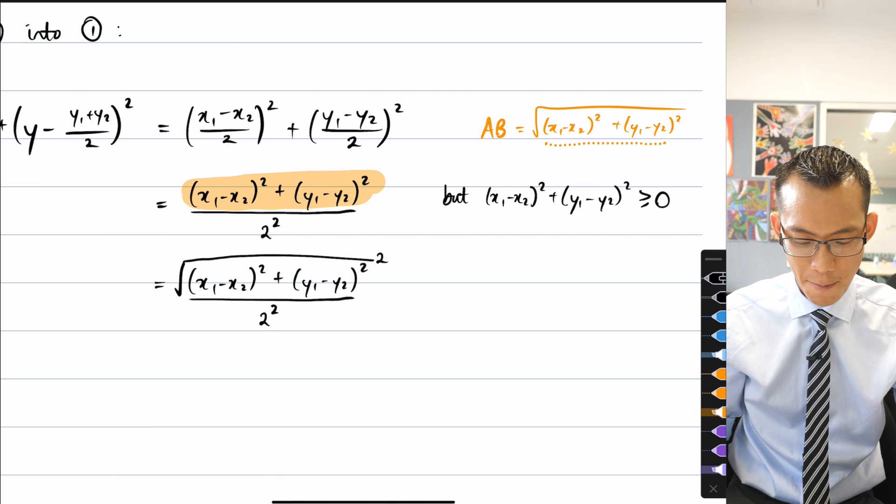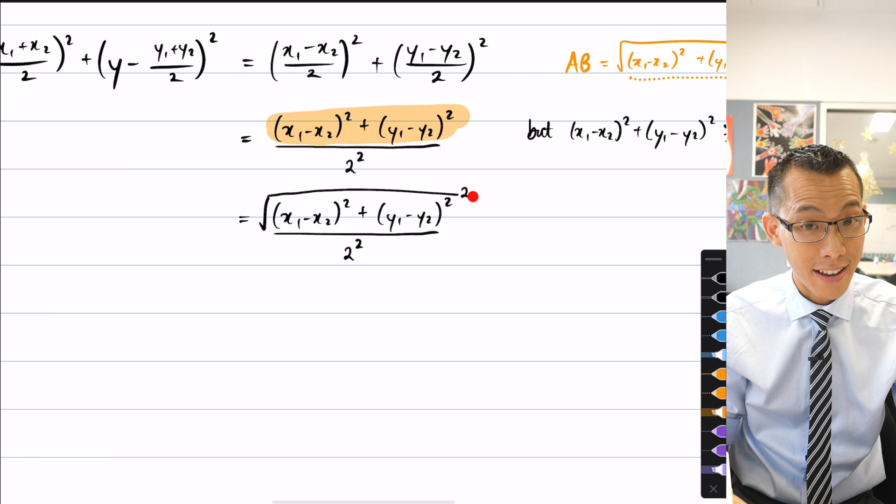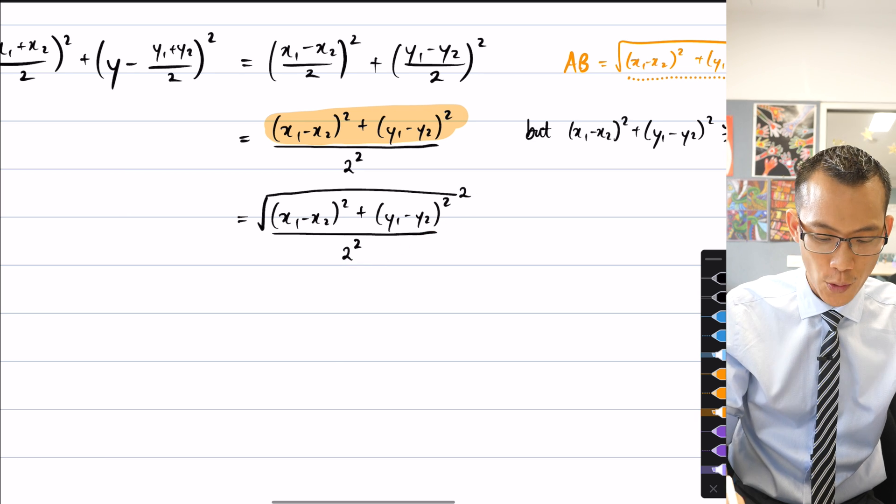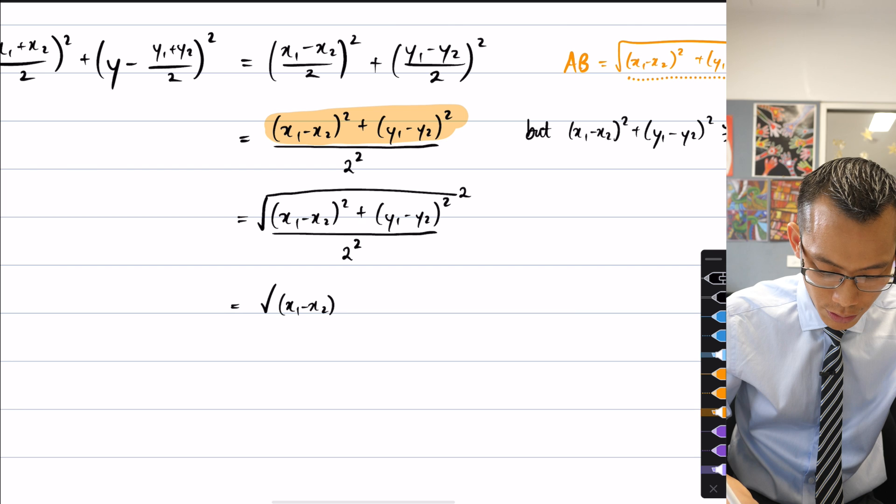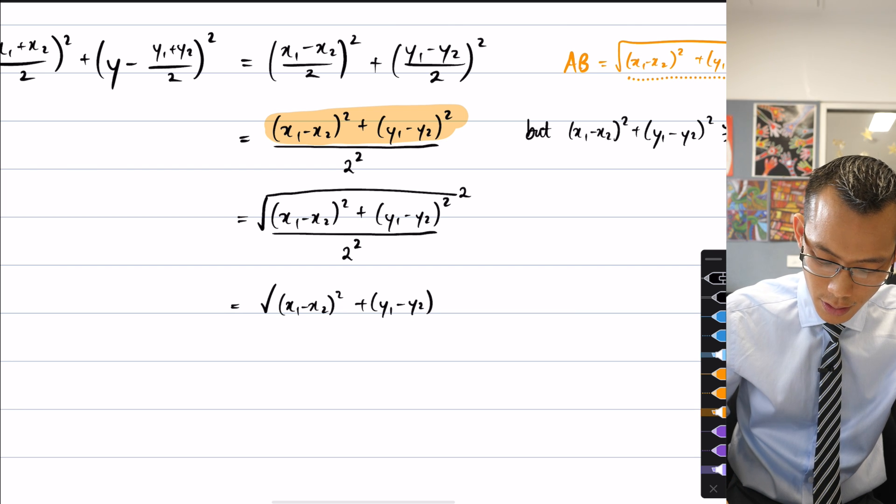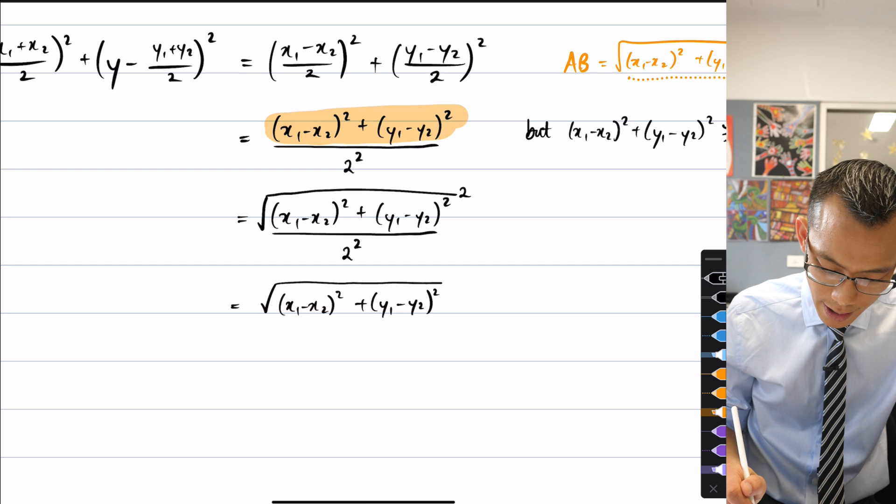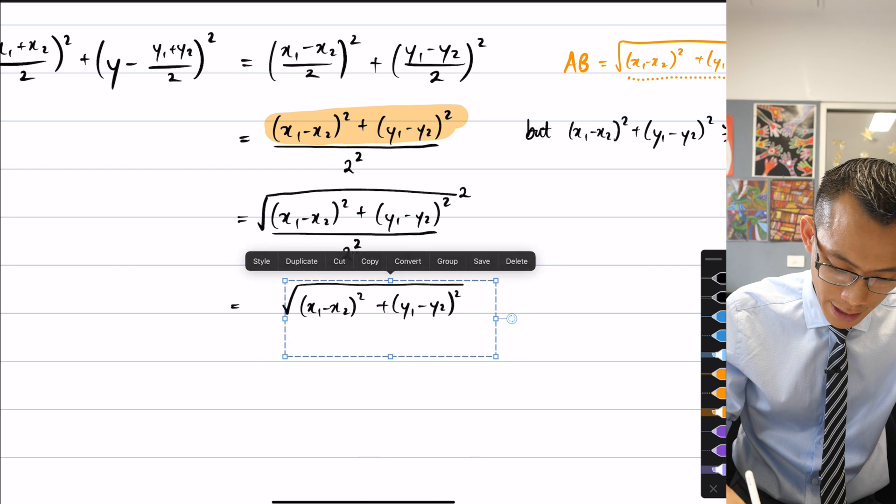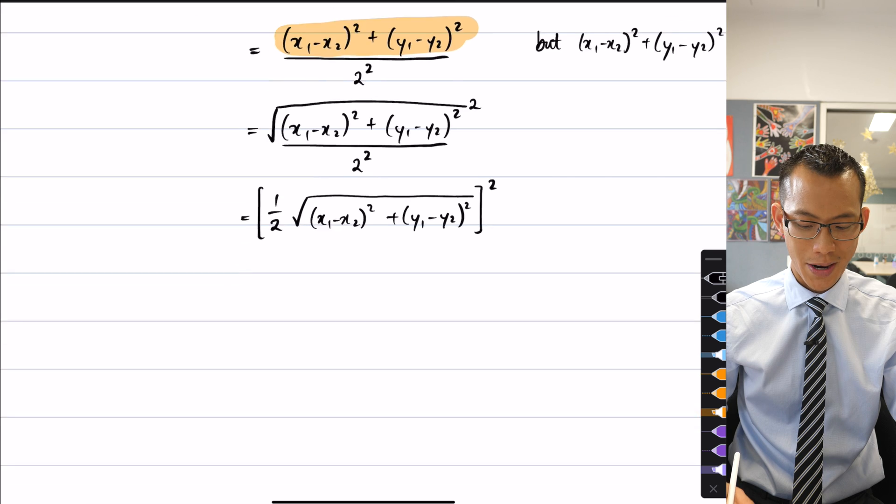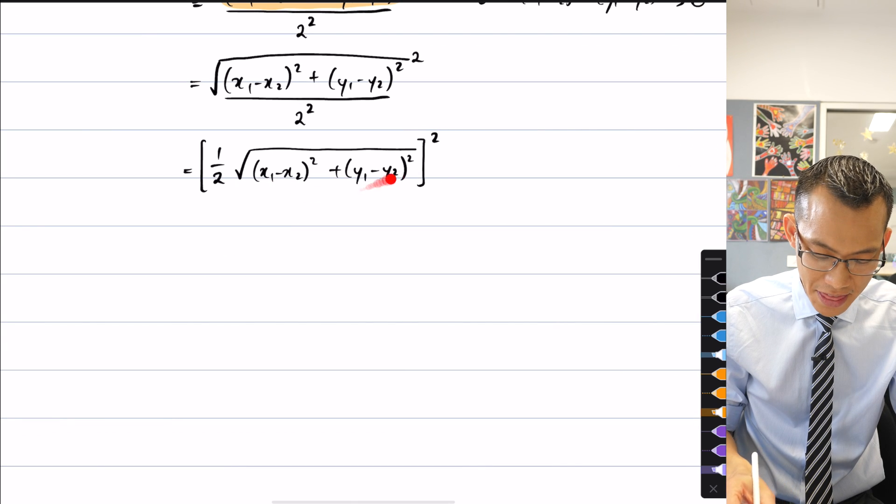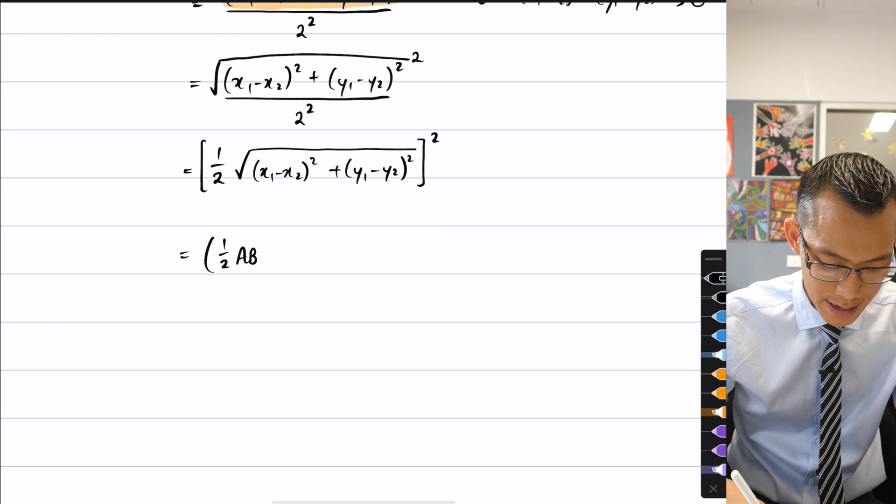So have a look now. What have I got? I've got the numerator is squared, the denominator is squared. So therefore, I'm just going to boil that fraction all into one. I've got the square root of x1 minus x2 squared plus y1 minus y2 squared. All of that is underneath the square root. And then I also have that two on the denominator, I'm going to write that as a fractional coefficient. And all of that is squared. But then I can say, hey, this thing here, this is ab, everything underneath that square root. So I can say this is equal to half ab all squared.